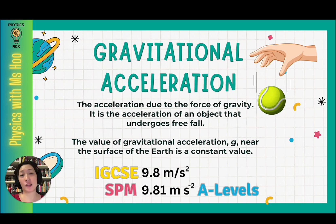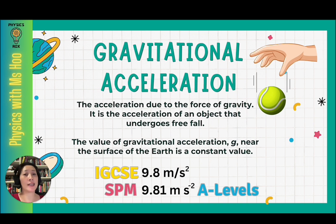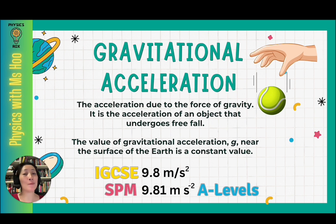Because of that, you are expected to know this value. However, in your exams, this value is normally provided in the formula sheet or the front of your exam paper. For those taking the IGCSE physics paper, the value of G is taken to be 9.8 meters per second squared. For those taking SPM or A-levels, this value is taken to be 9.81 meters per second squared.